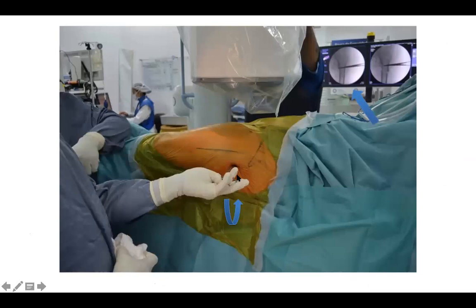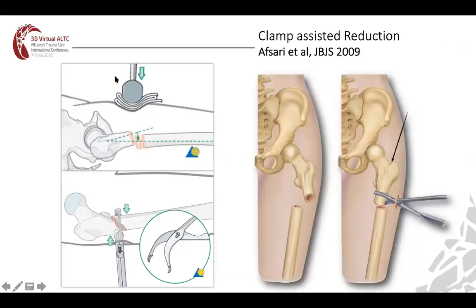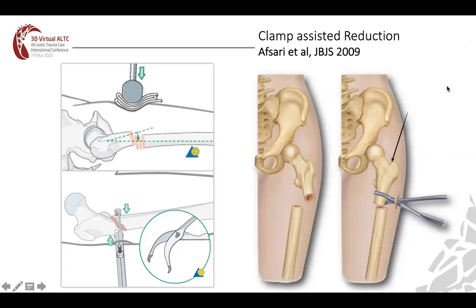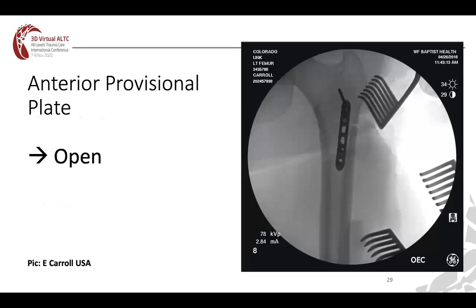This is a picture from Rodrigo Pesantes showing how with a clamp he pushes the fracture to reduce. Another way is using a hammer pushing on the proximal fragment which is flexed, or using a clamp or bone clamp to reduce — published in the Journal of Bone and Joint Surgery 2009. Cerclage wires may reduce the risk of failure; they help with medial cortical support, lead to better healing by reducing lateral fracture opening, and can be placed percutaneously or open. This was published in multiple studies: International Orthopedics 2011 by Muller et al., Archives of Orthopedic Trauma Surgery 2014, and Italian Injury 2015. You can also use a small provisional anterior plate through an open approach to reduce a subtrochanteric fracture before passing your wire and before reaming.